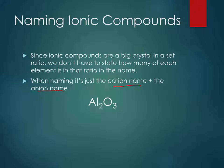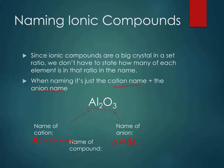So when we name them, we just give the cation name, and then the anion name. So if we look at this one, our cation is aluminum and our anion is oxide. So our compound then would be aluminum oxide.